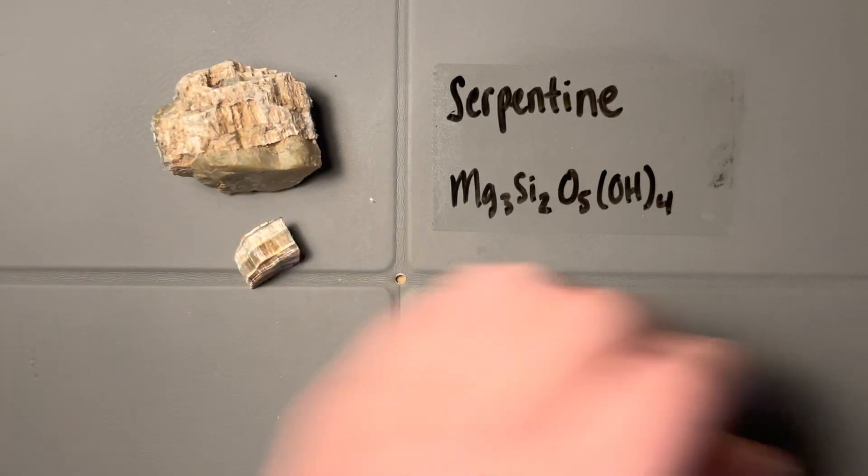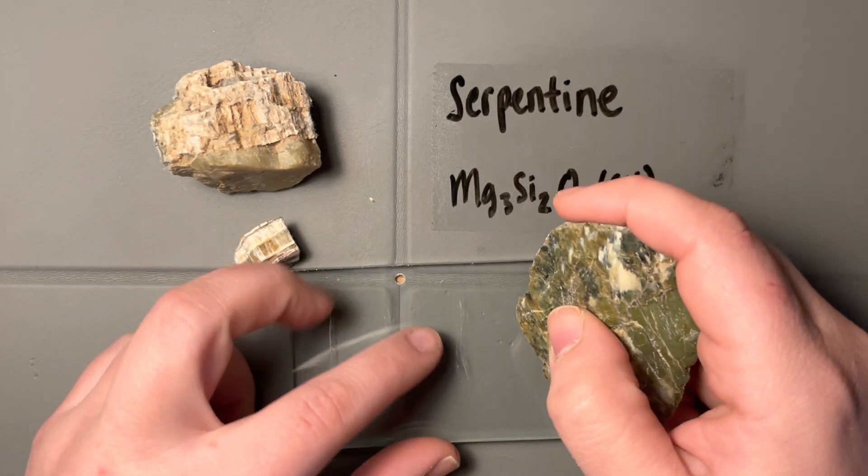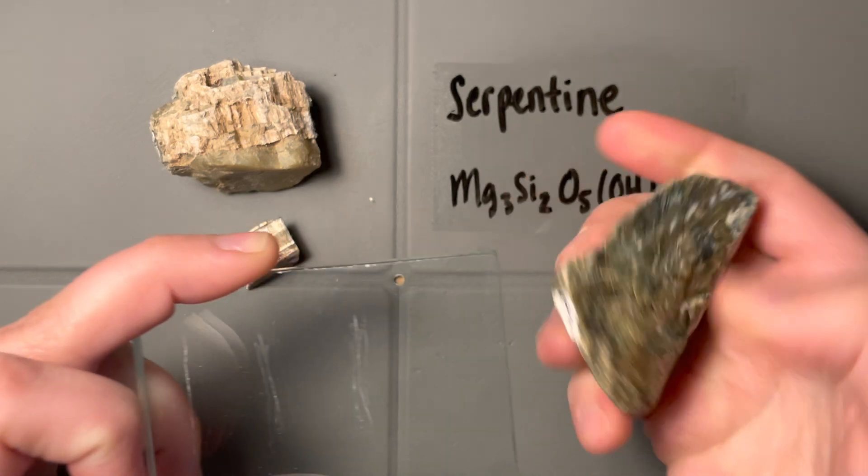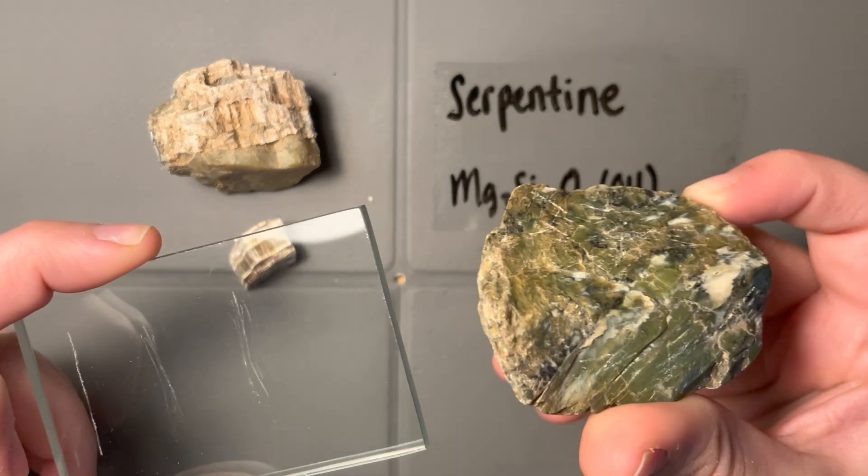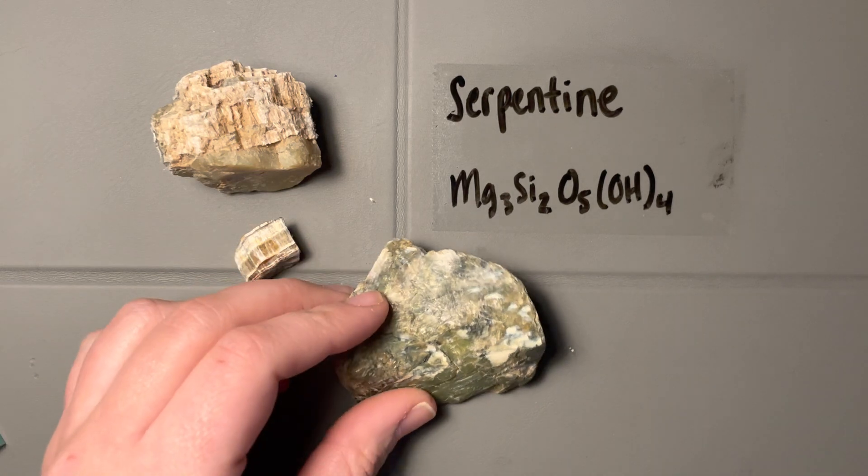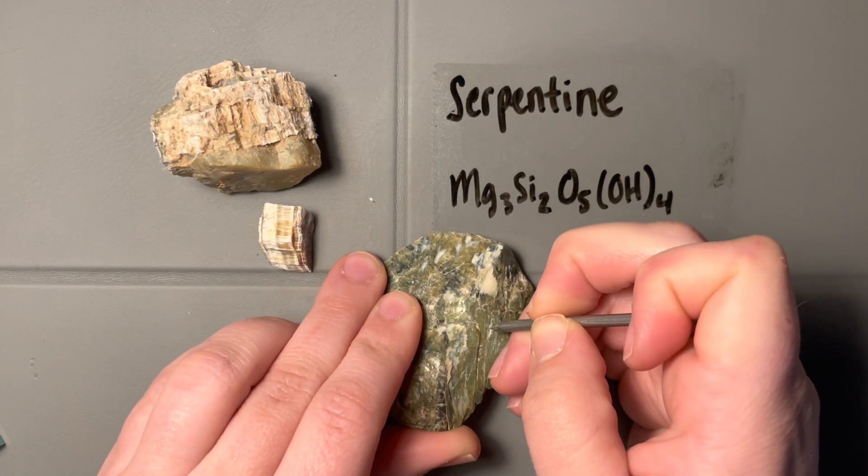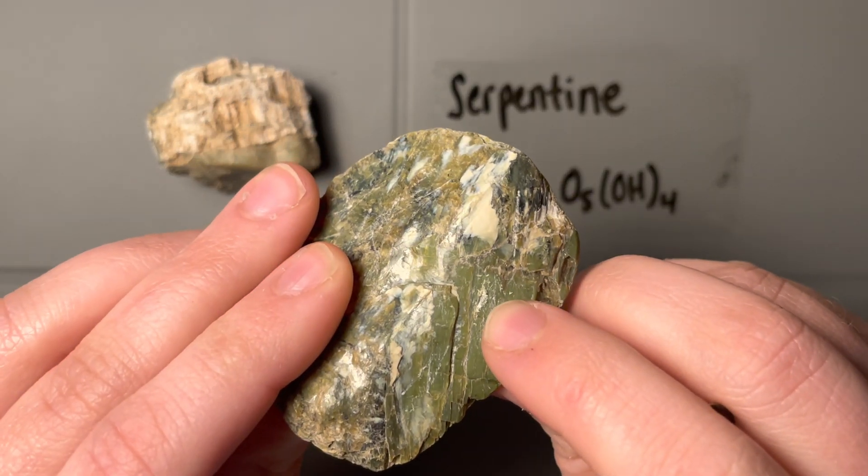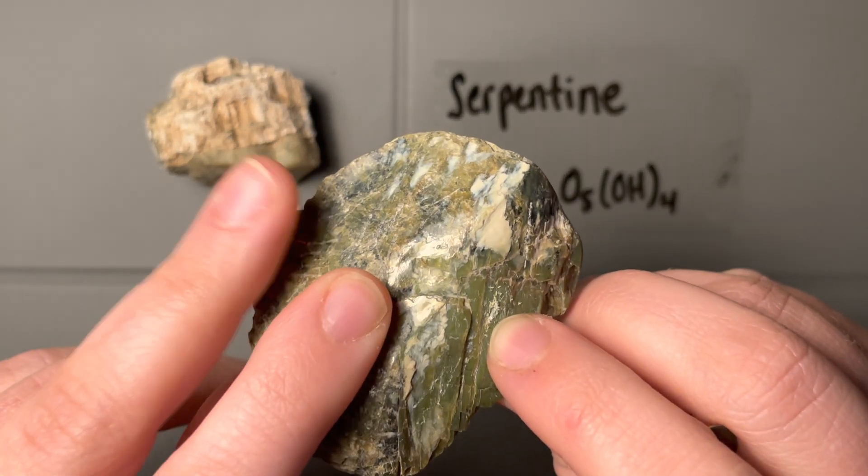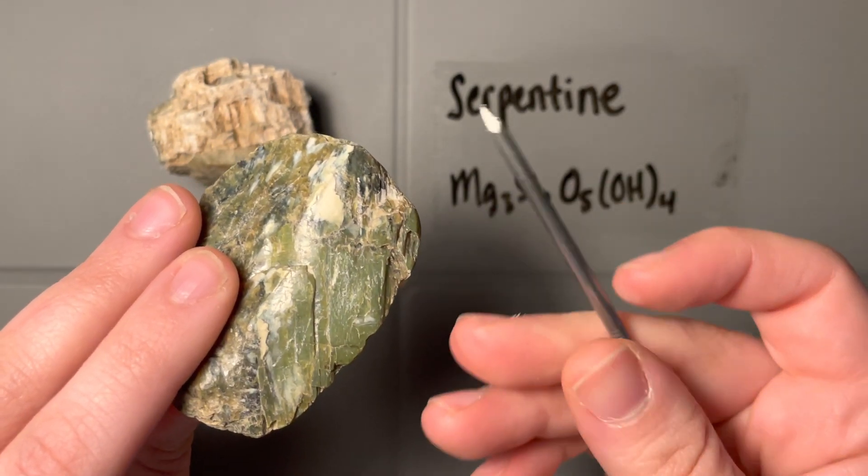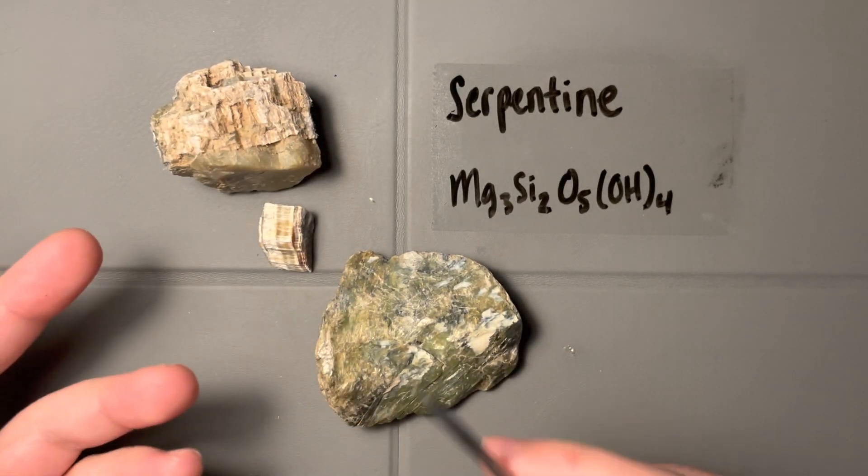All right, so actually I can't scratch the glass with this one even though it's such a cohesive chunk. So let's give it a go with the nail. All right, yeah, it's pretty soft. This one, even though it looks really hard, it's pretty darn soft. It powdered readily with this nail here.